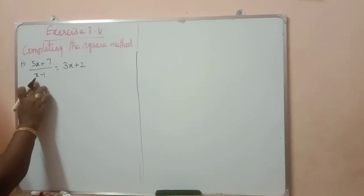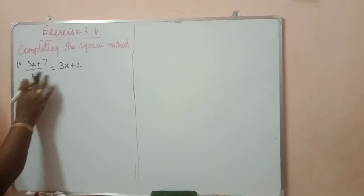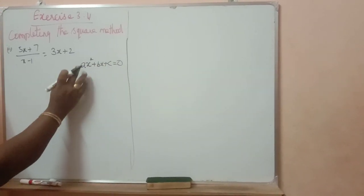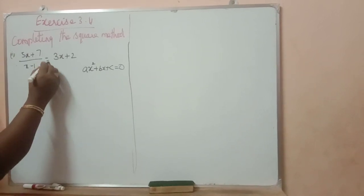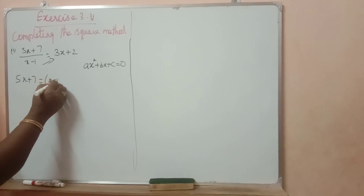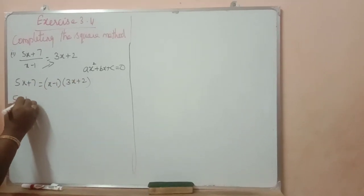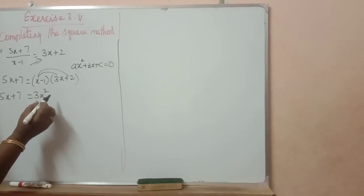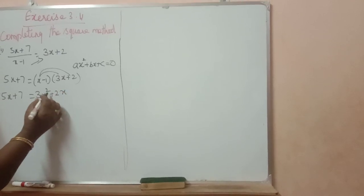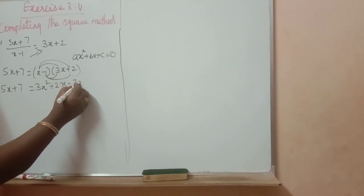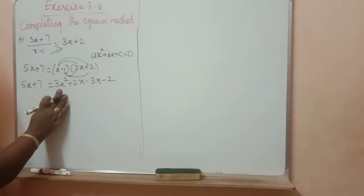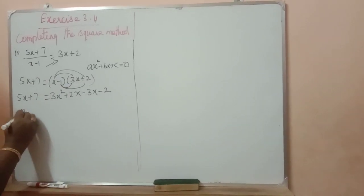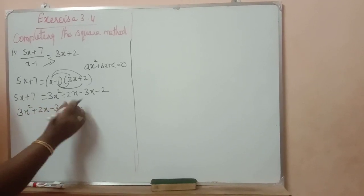Next, the second subdivision: 5x plus 7 by x minus 1 equal to 3x plus 2. First we have to write it in standard form. Standard form of a quadratic equation: ax square plus bx plus c equal to 0 — that is x square term, x term, then constant. First we have to cross multiply. 5x plus 7 is equal to x minus 1 into 3x plus 2. Multiply x with both the terms: x into 3x is 3x square. x into plus 2 is plus 2x. Multiply with minus 1: minus 1 into 3x is minus 3x, minus 1 into 2 is minus 2.